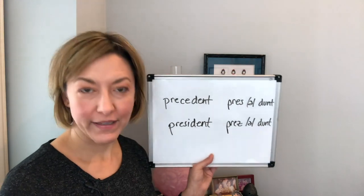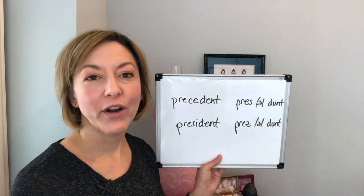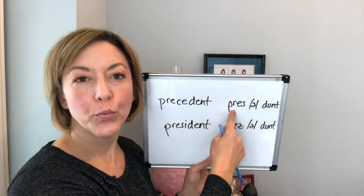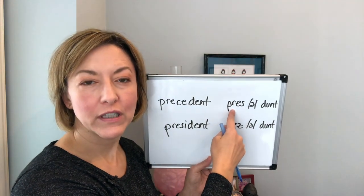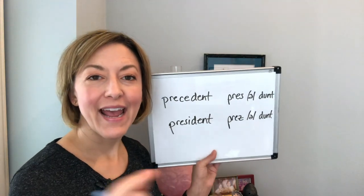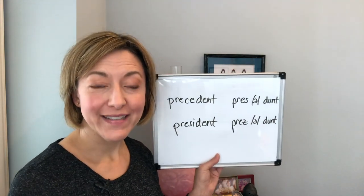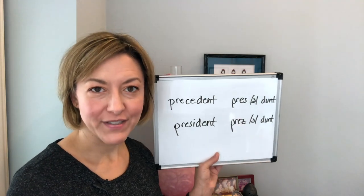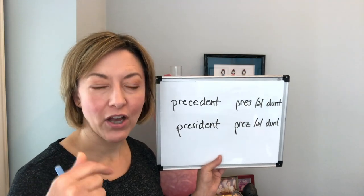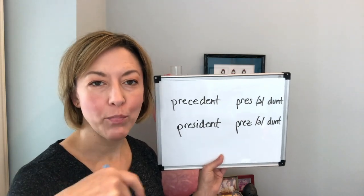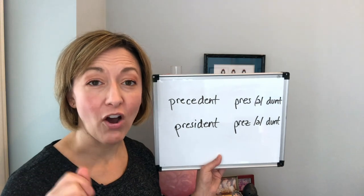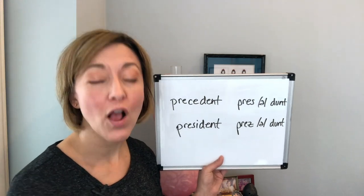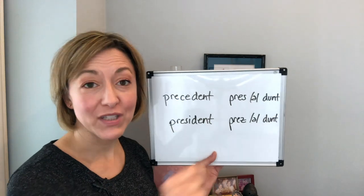To say 'precedent,' you're going to start with that 'pr, pr, pr.' To do this, get your lips ready for that R sound, and your tongue is either going to be pointed down or flipped back for that R. You're going to be ready for the R when you get your lips together for the P sound.